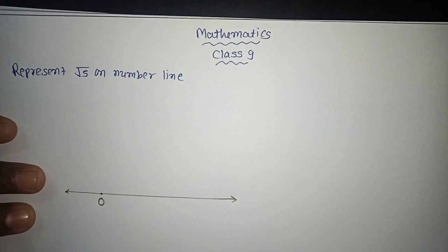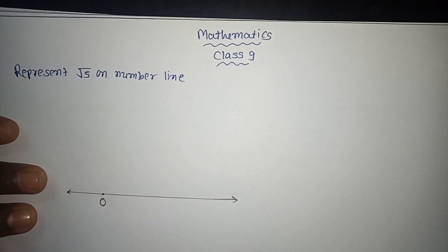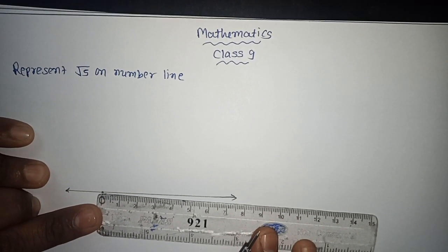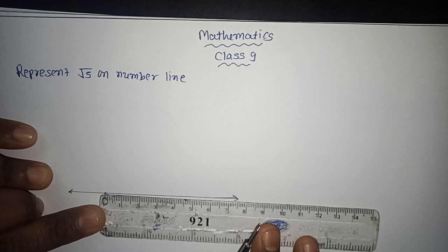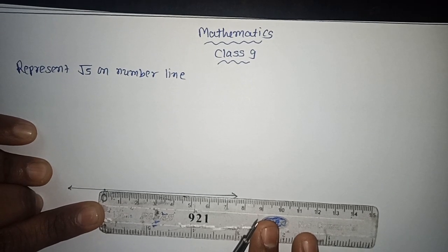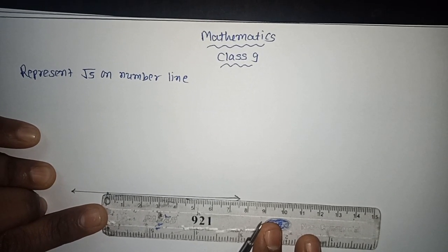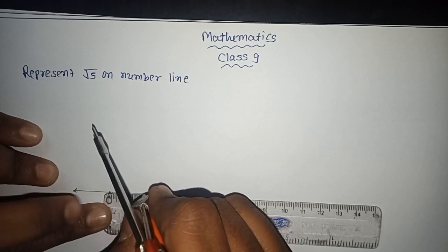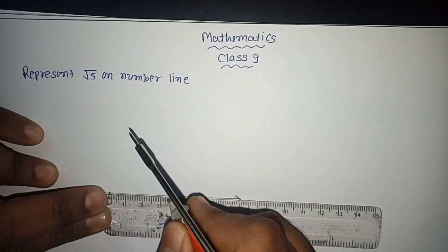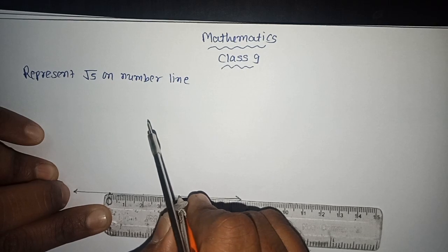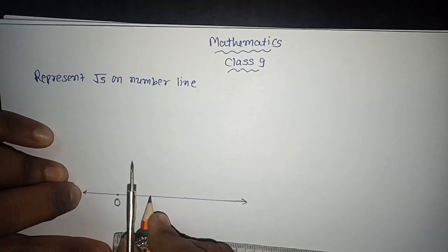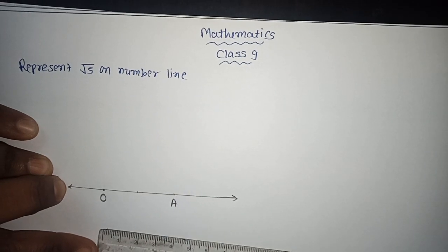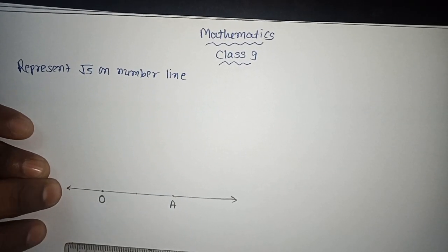To represent under root 5, first of all I will take 2 units on this number line. I will consider 1 unit is equal to 2 centimeters. So this is 1 unit and this is 2 units. I will keep that point as point A.